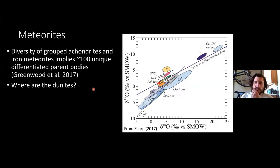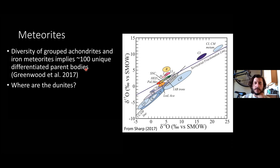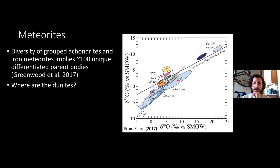That was the asteroidal evidence for this. There's also evidence for the dunite shortage in the meteorite record. Given the oxygen isotope diversity in meteorites — shown on a triple oxygen diagram — along with the various iron meteorite types, this implies up to around a hundred unique differentiated parent bodies. This again begs the question: where are all the dunites from these differentiated parent bodies? We have crusts and various other materials, but not really mantle material.